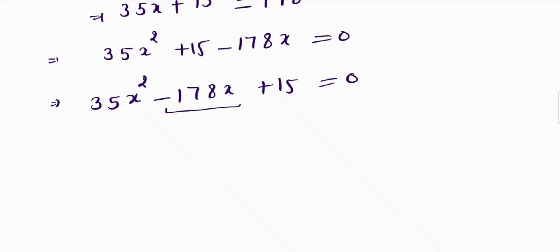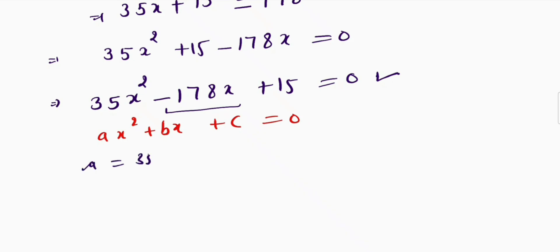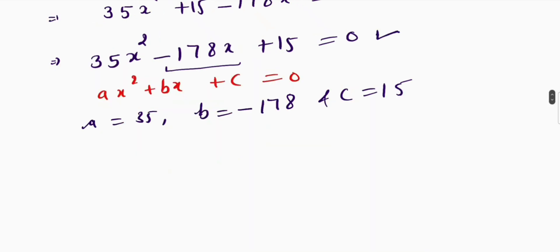I won't be able to find the values of x using the mid-term split method, so I'll use the quadratic formula. Comparing with the general quadratic equation ax squared plus bx plus c equals 0, here a equals 35, b equals negative 178, and c equals 15.